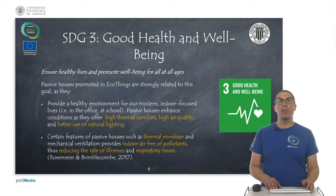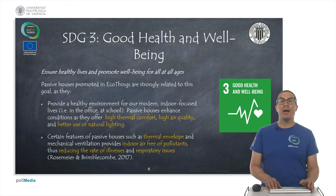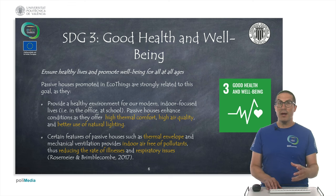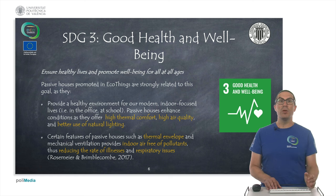Sustainable Development Goal number 3 is Good Health and Well-being. Within the intelligent house we develop, we pursue thermal comfort. Many passive houses include high air quality systems — including one method of obtaining air within the house from underground — which could include a filtering system to improve air quality. That might have an impact on health because indoor air is free of pollutants, and we can reduce the rate of illnesses and respiratory issues.